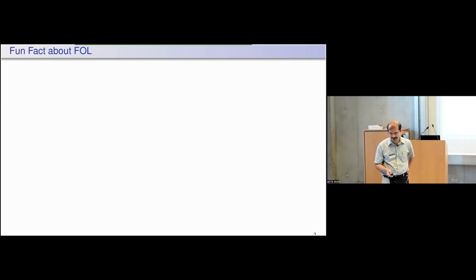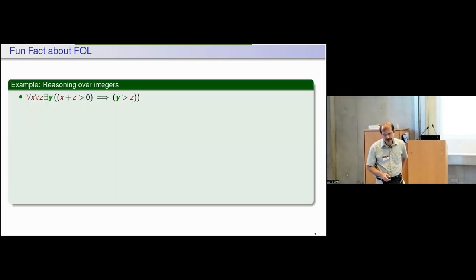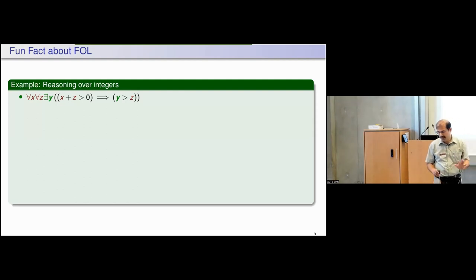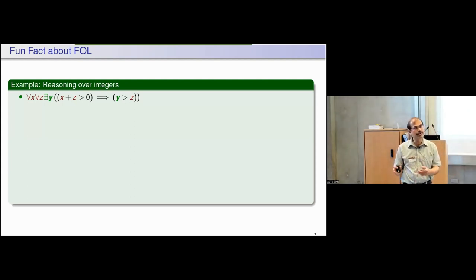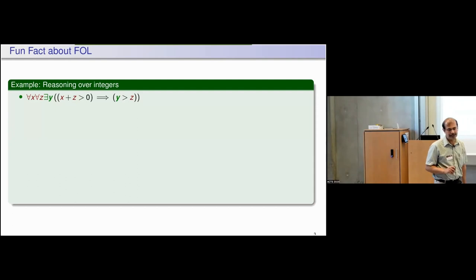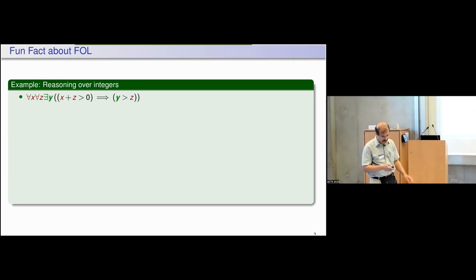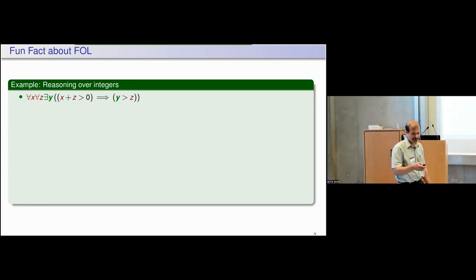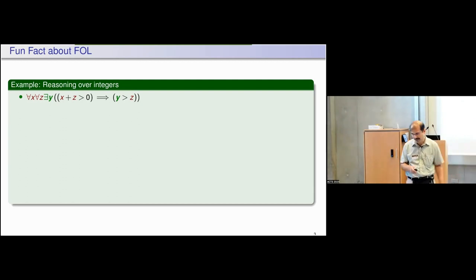Here is a fun fact about first order logic. Suppose I take this formula in which I have colored the variables differently — to denote that there are some universal variables and some existential variables. The structure of the quantifiers here is the universal variables to the left of the existential variables. Throughout the presentation I will denote the existential variables in green and the universal variables in brown.